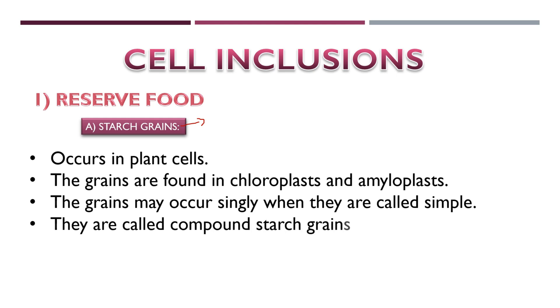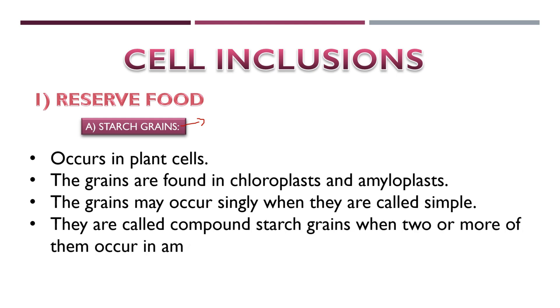In plants, there are carbohydrates — complex carbohydrates. These are stored in chloroplasts and amyloplasts, which are types of plastids.